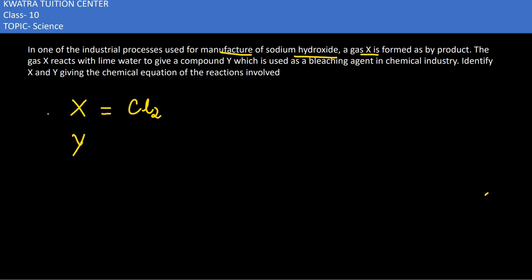Y, and I know which product we get from it. Bleaching powder, because it has been mentioned it is a bleaching agent in chemical industry. So Y is nothing but bleaching powder, and what is calcium oxychloride.